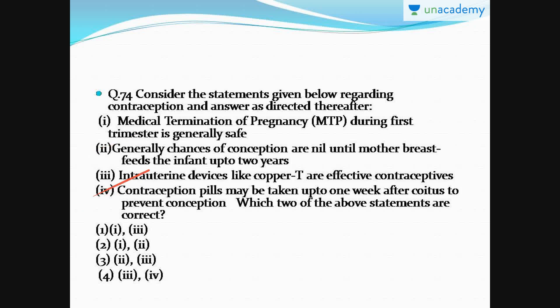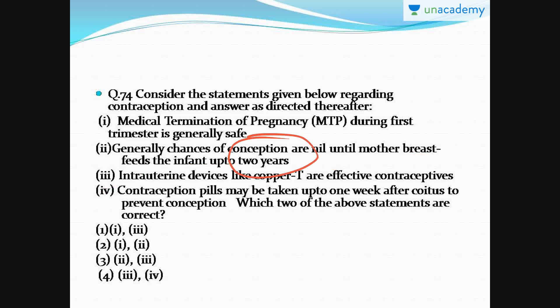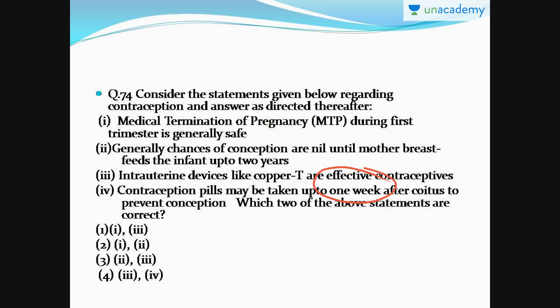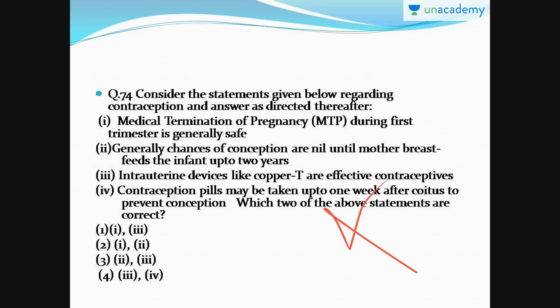Options two and four are wrong. Generally, chances of conception are nil until the mother breastfeeds the infant — but this duration is not two years, it is hardly six months. Similarly, the fourth statement gives the wrong duration. Contraception pills taken up to one week after coitus to prevent conception is wrong — this duration is only 72 hours.